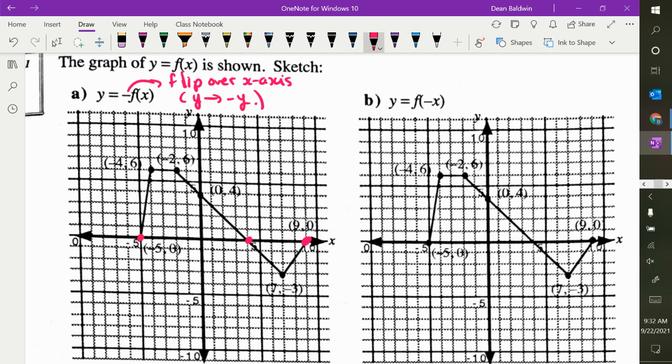So this one up here, negative 4, 6 becomes negative 4, negative 6. So it flips down to there. And 2, 6 becomes 2, negative 6. And that's at 0, 4. I connect the points as I go. So you can see, we just flipped it right over the x-axis.